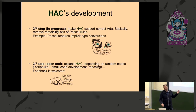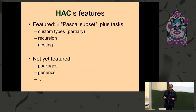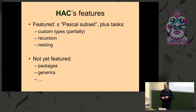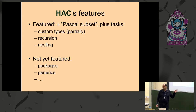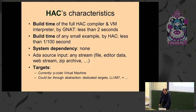That's only one example, but there are Pascal things remaining that need to be removed. The third step is to increase this small subset, because Hack currently features only the Pascal subset — but it's already not too bad, you can do cool things with it. You can define your own types, you have nesting and recursion, but you don't yet have probably the most useful feature of Ada: modularity and packages. And you also don't have generics. So it's really a work in progress.